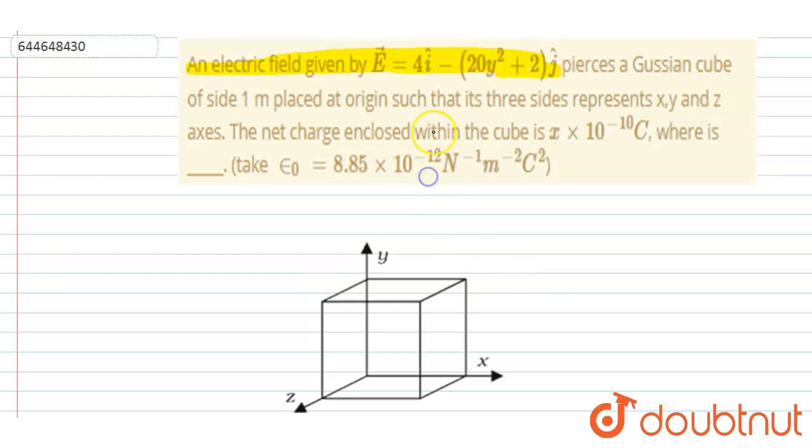And for this surface, the y equals 1. So for this surface, the y component will be 20. So because of the variable component, there will be a net E dot ds, but not because of the constant component.